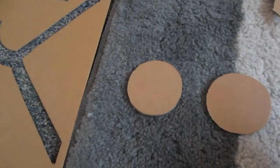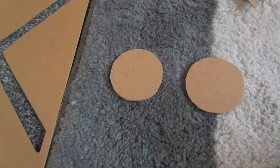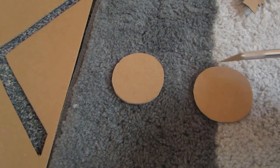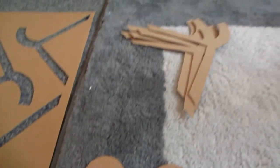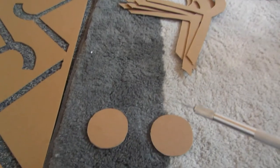All right, so I've cut two little circles out. So now what I'm going to do is measure out six evenly spaced slots in these for the six pieces of the chandelier to go into.